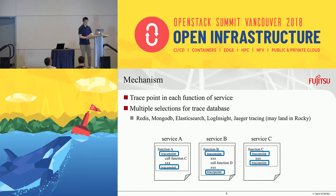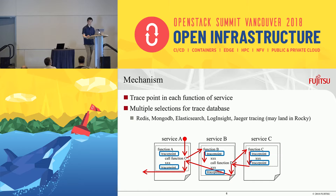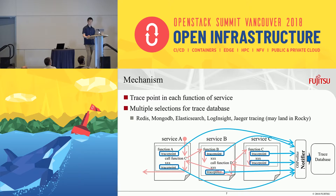Now I'd like to talk about the mechanism a little bit. Basically, functions of services have trace points at the beginning and the end of the functions, like the blue box in the figure. In this example, a request comes into service A and it calls function B of service B and then function C of service C. When the request passes the trace points, it calls a notifier that is defined in OS Profiler's source code. What the notifier does is store data like timestamp and the name of the service that calls the notifier, and so on, to the trace database.